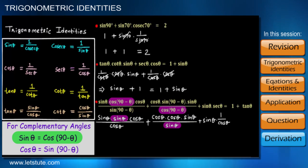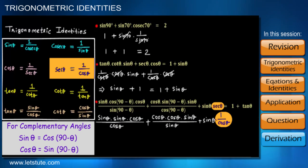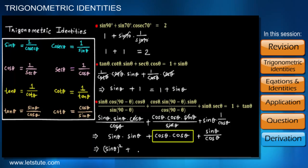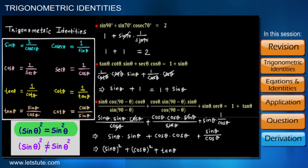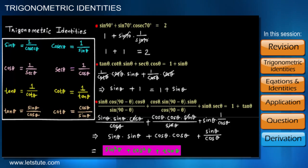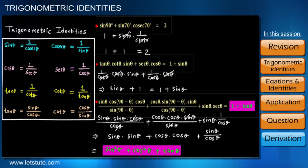cos(90 − θ) equals sin theta and sin(90 − θ) equals cos theta. We also use the identity sec theta equals 1 upon cos theta. To simplify further, we write sin theta times sin theta as sin²θ, and this gives cos²θ. We know sin upon cos is tan. An important point: sin²θ means (sin θ)², not sin(θ²). Using this, the expression simplifies to sin²θ + cos²θ + tan theta, which we compare to the right hand side: 1 + tan theta.